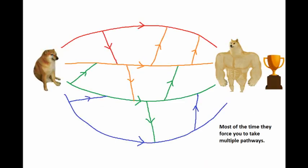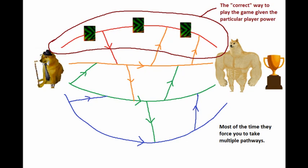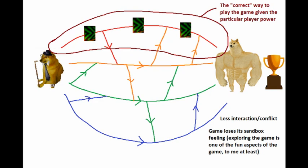Most games have multiple pathways to victory, meaning that there are multiple ways to gain points. The easiest way to ruin this, in my opinion, is to add unique player power that makes either a pathway or playstyle so obviously better than the other ones, giving players the correct way to play the game. Not only would it reduce conflict or interaction within the game, it would also take out the sandbox feel of some games.